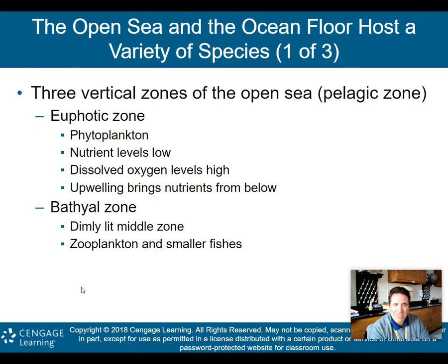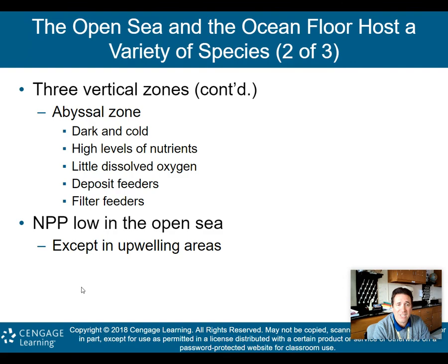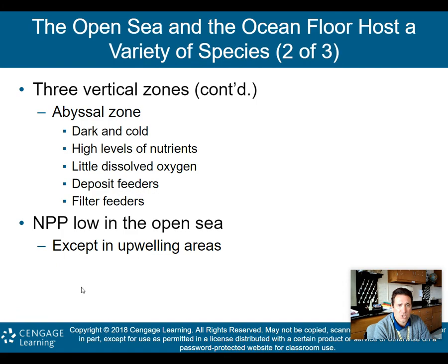Next is the bathyal zone — below the euphotic zone, a dimly lit middle zone where zooplankton and smaller fishes are found. At the bottom is the abyssal zone, dark and cold, with high nutrient levels but very little dissolved oxygen. You won't see a lot of big fish there — mostly deposit feeders and filter feeders. There are nutrients down there, but the low dissolved oxygen content keeps large creatures away.